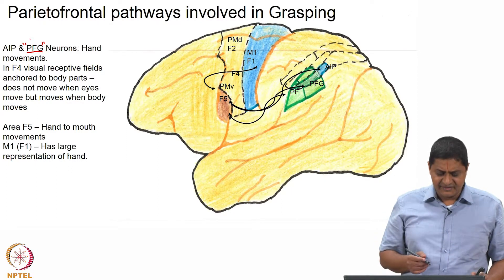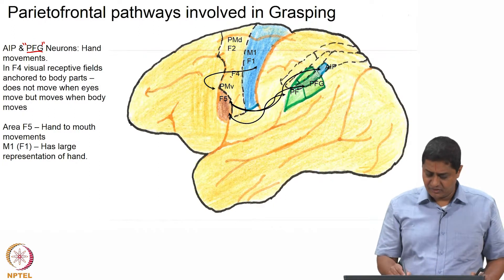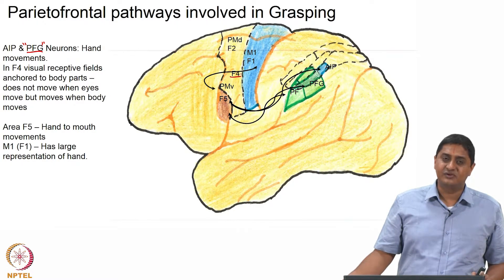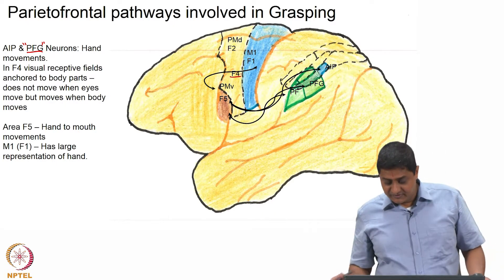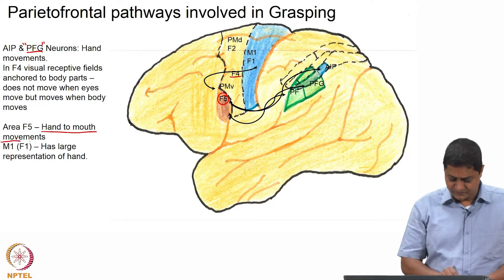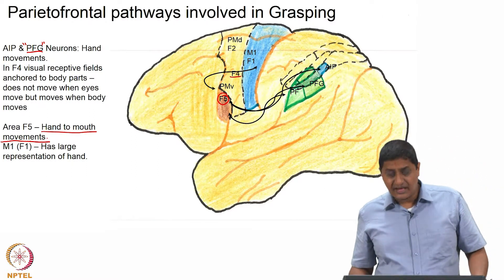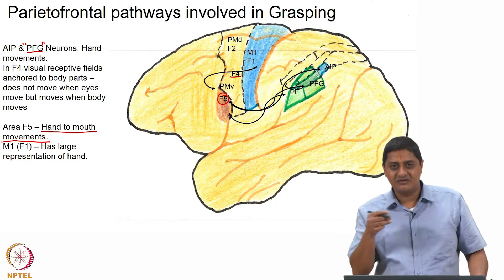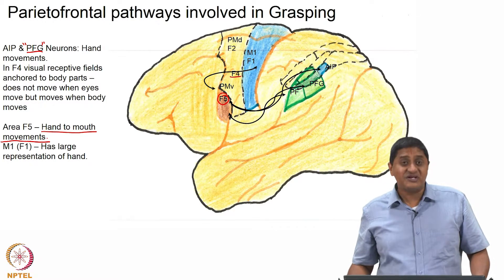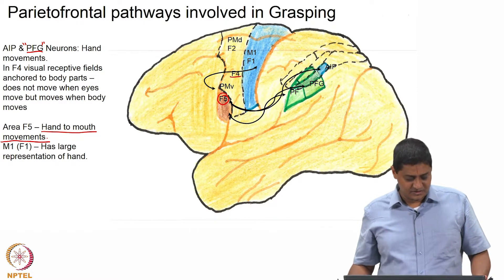Hand movements means movements within the hand, not reaching movements. Reaching movements involve movements of the arm, whereas the AIP and PFG neurons are believed to contribute to hand movements. Area F4 is active when the particular part of the body moves, but not necessarily when the eyes move. It is also believed that area F5 has a set of neurons that can coordinate hand-to-mouth movements — an evolutionarily very important activity for survival.